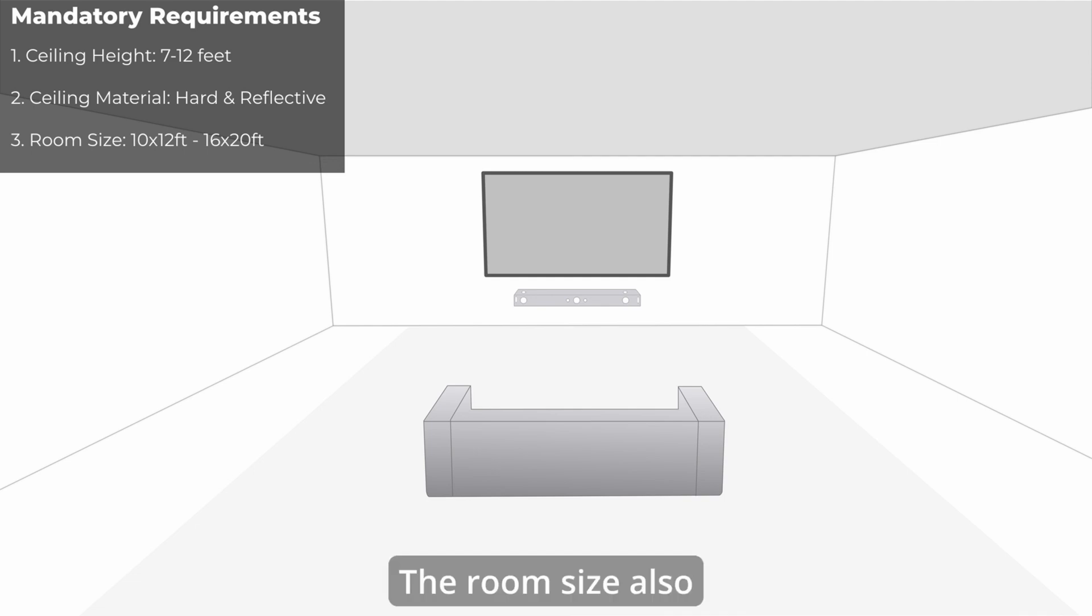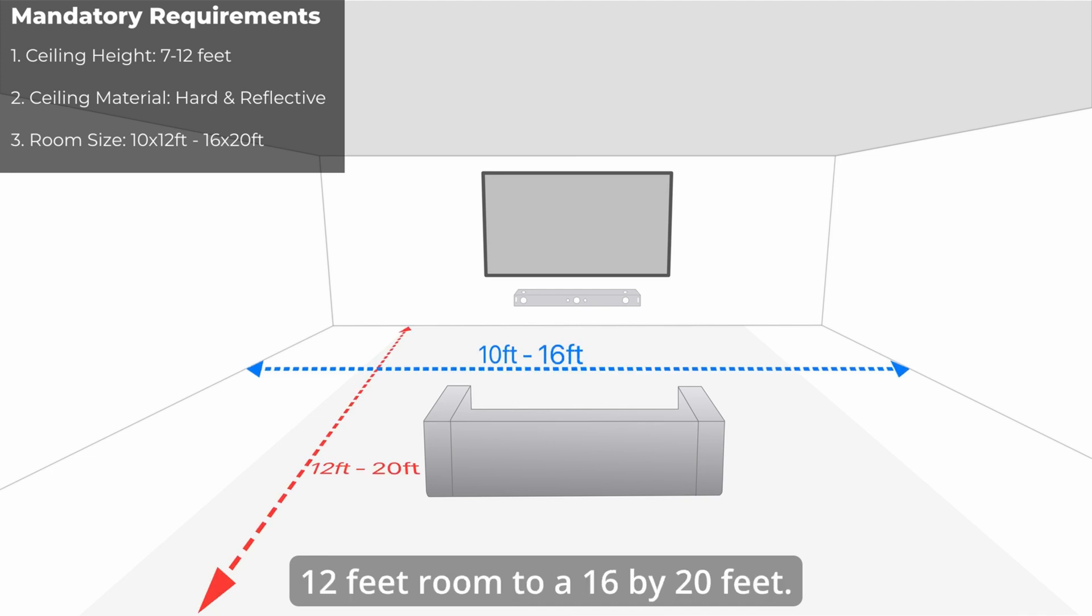The third thing is room size. The room size also needs to be just right. So it can range from a 10 by 12 feet room to a 16 by 20 feet. If you exceed in either of these dimensions, then the Atmos effect will not happen. Small rooms tend to trap sounds so Atmos effect will be too strong, and large rooms you'll have diluted reflections or even reverberation which will reduce the immersive effect.